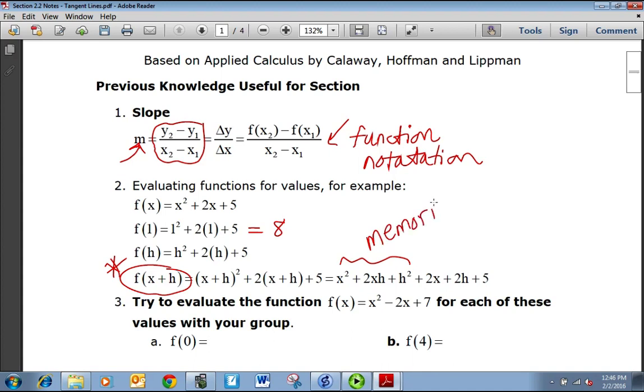Maybe not in this section, but in the future. Just so every time you need x plus h squared, you know what it is and you don't have to foil it out. So this 2x plus 2h was the distribution of 2 times x plus h, and then plus 5. You can't combine any terms, but this is the expanded way to write it out, which we'll need to do later on.